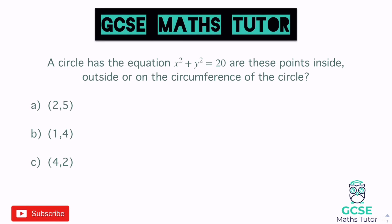A circle has the equation x squared plus y squared equals 20. Are these points outside, inside, or on the circumference of the circle? We know a point is on the circumference if subbing in gives 20. For the first point (2, 5): 2 squared plus 5 squared is 4 plus 25, which is 29. That's bigger than 20, so it's on the outside of the circle.